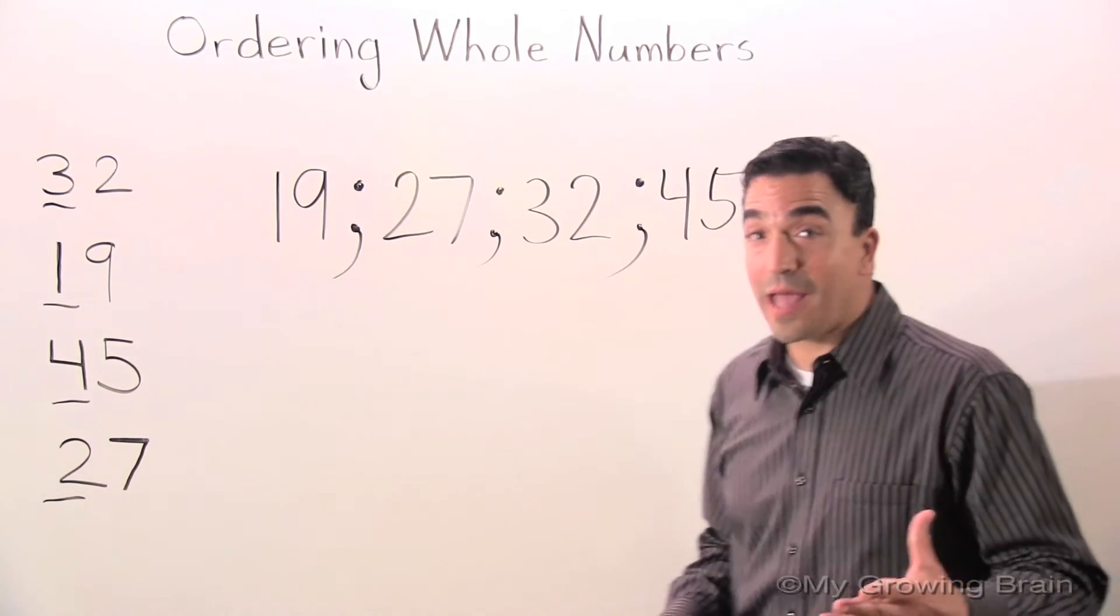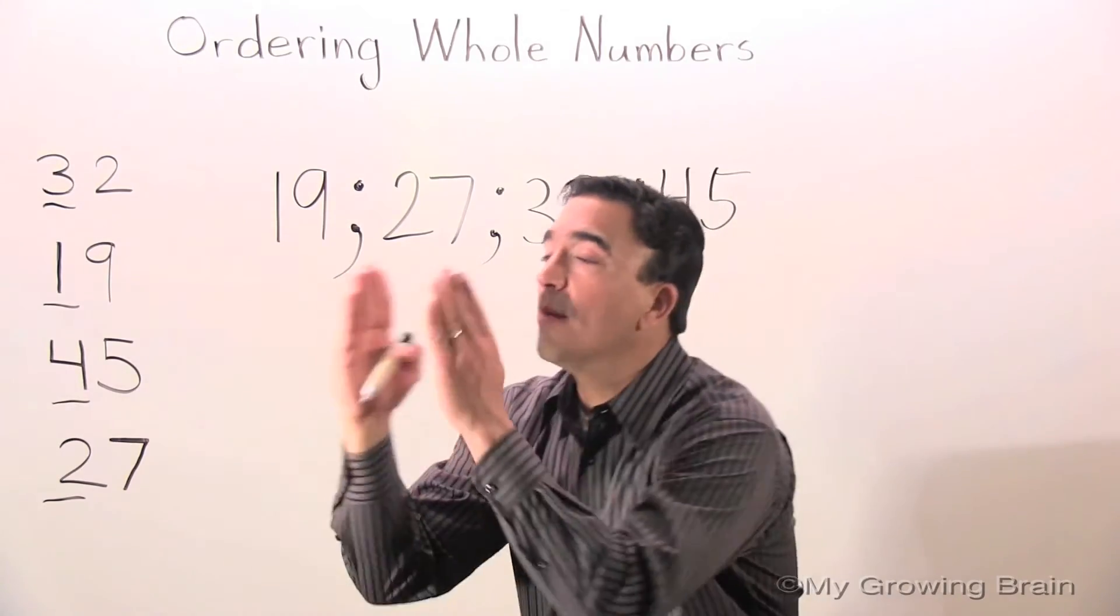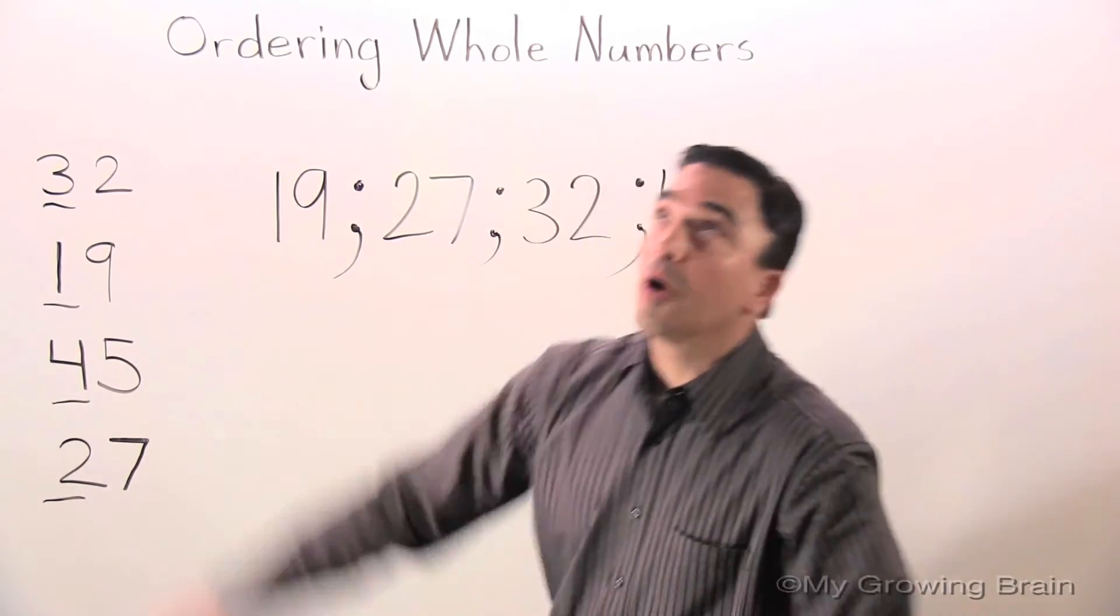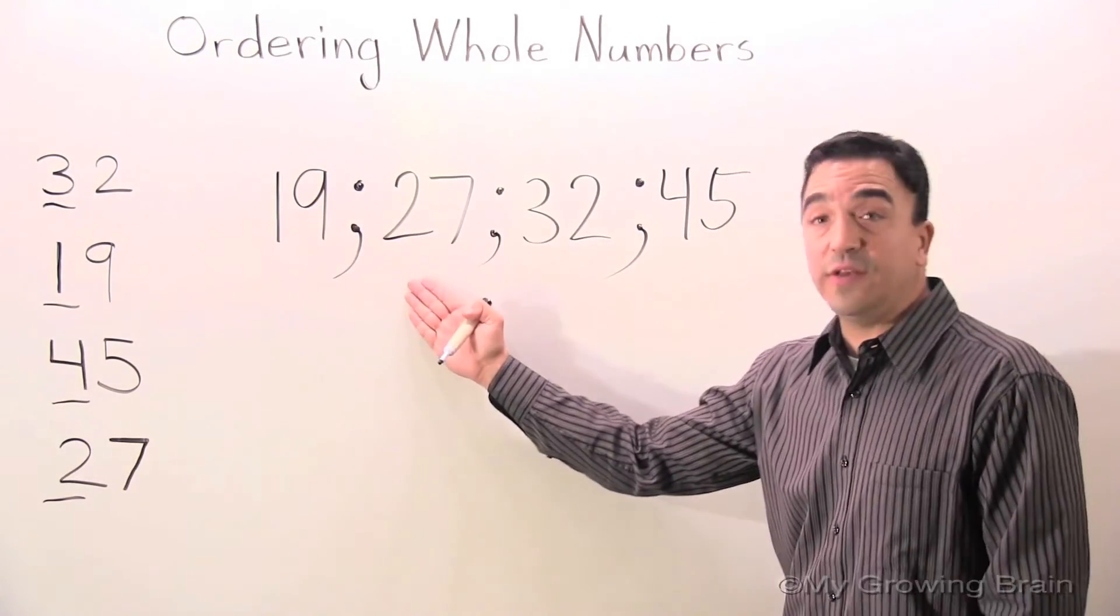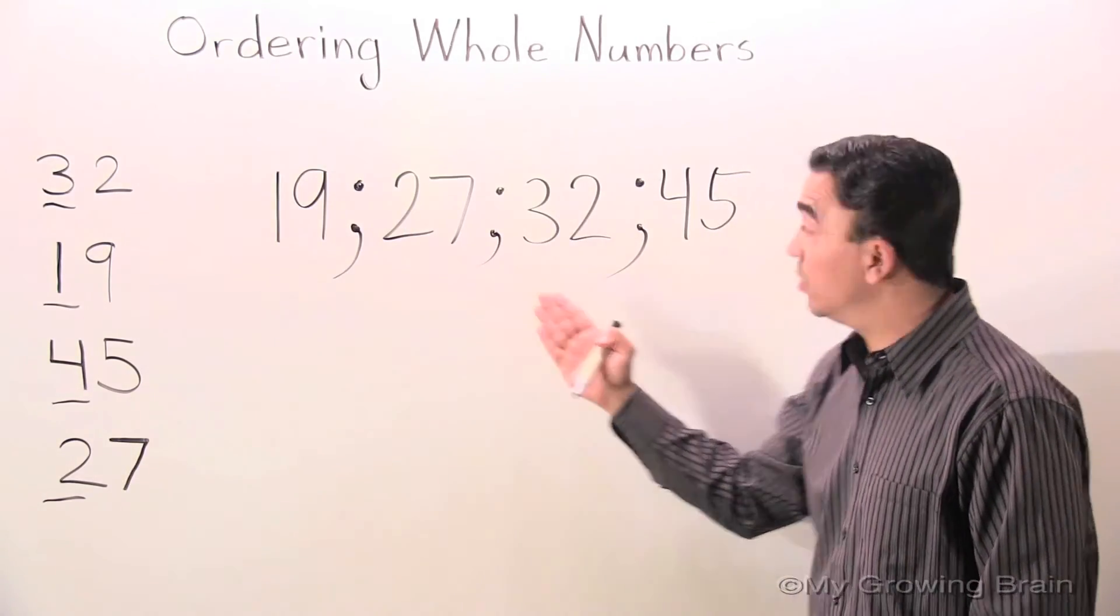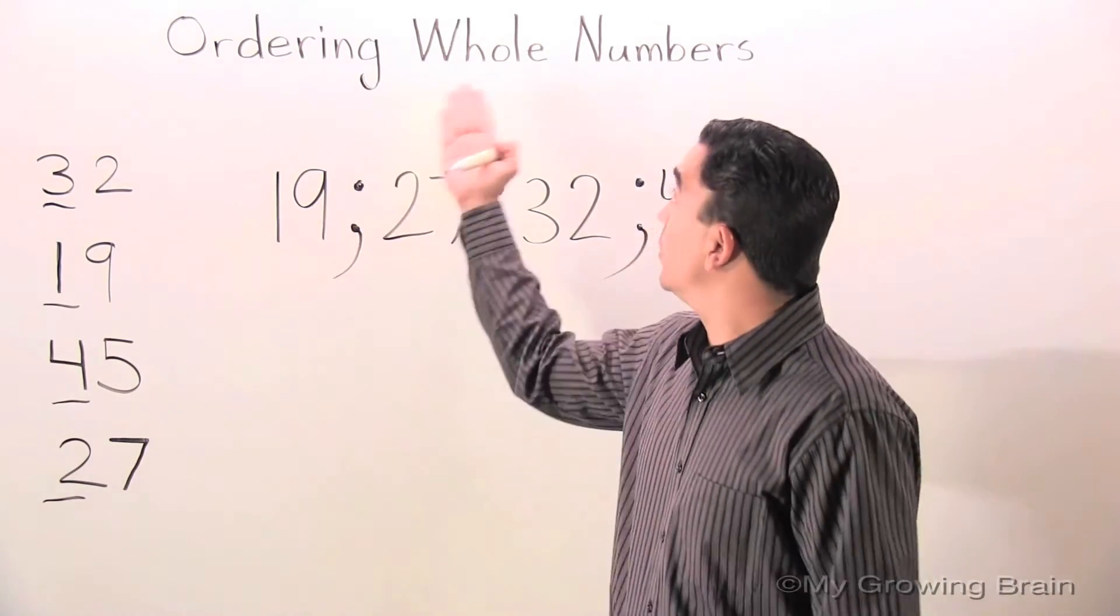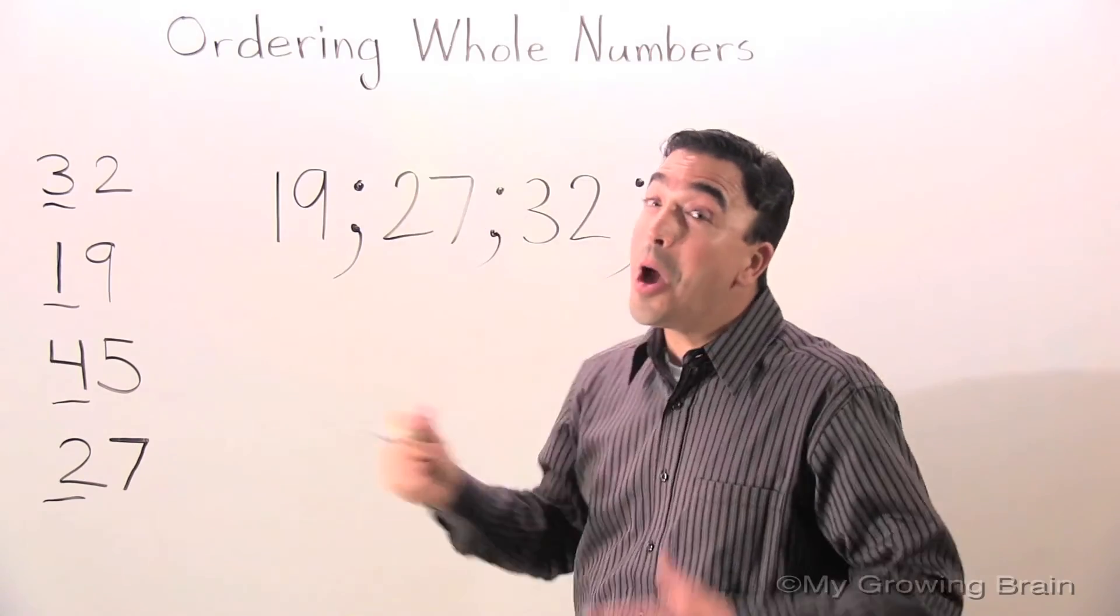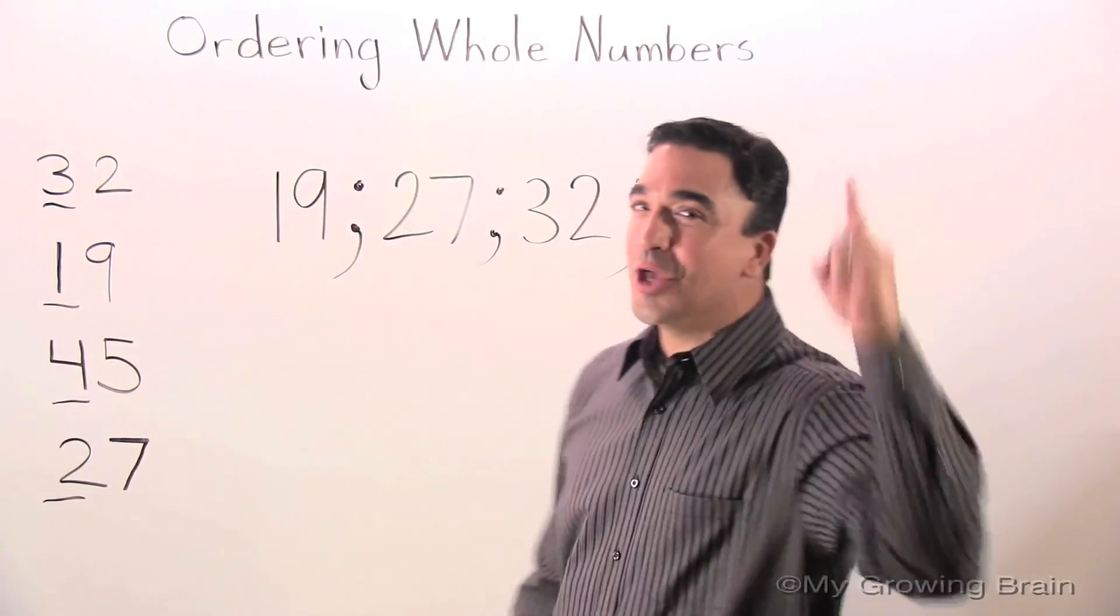Once again, we put these numbers in order from least to greatest: 19, 27, 32, 45. This concludes our lesson on ordering whole numbers. Coach Mike at My Growing Brain. Challenge yourself.